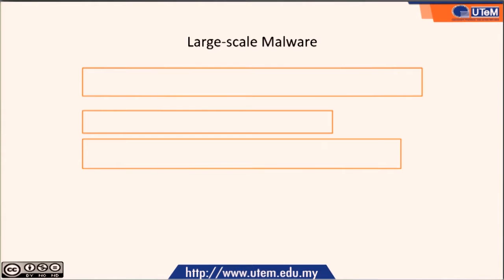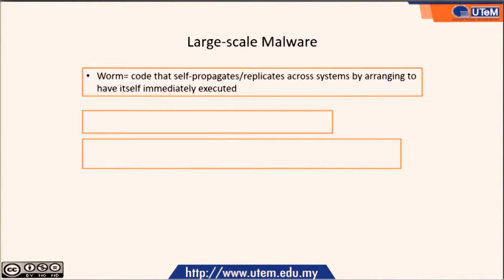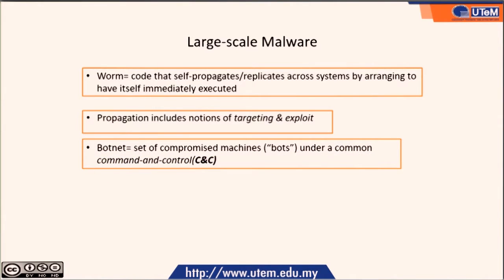Next, we explore large-scale malware: worms. A worm can be defined as code that self-propagates or replicates across systems by arranging to have itself immediately executed. Propagation includes the notion of targeting and exploiting. An example is a botnet, which is a set of compromised machines or bots under a common command and control, or C&C.